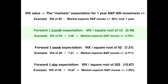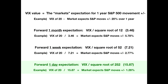If we want to know the forward one-month expectation, we can take the VIX value of 20 and divide by the square root of 12 — representing 12 months in the year — which is 3.46. So a VIX of 20 divided by 3.46 means the market expects the S&P 500 to move plus or minus 5.78% over the next one month. We can also go down to one week using the square root of 52, which is 7.21, implying plus or minus 2.77% per week.